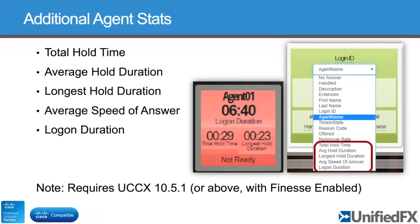The center graphic shows the card-based view — you can also use a tabular view — and the sample shows logon duration, total hold time, longest hold duration, etc. Because it uses the Finesse API to get these extra data feeds, it technically requires UCCX 10.5 or above with Finesse enabled, meaning UCCX 11 and above since that's when Cisco made the transition to Finesse. You can still use our software without these extra parameters via the UCCX CTI connection, which goes all the way back to the very first versions of UCCX.